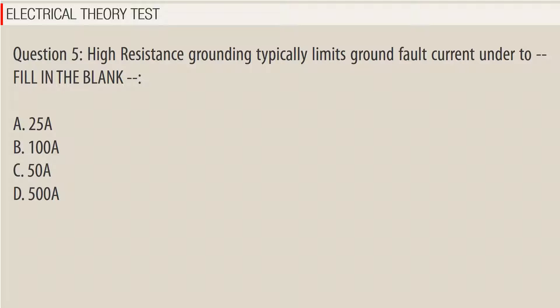Question 5: High resistance grounding typically limits ground fault current under _____ A. 25A, B. 100A, C. 50A, D. 500A. Answer: A.